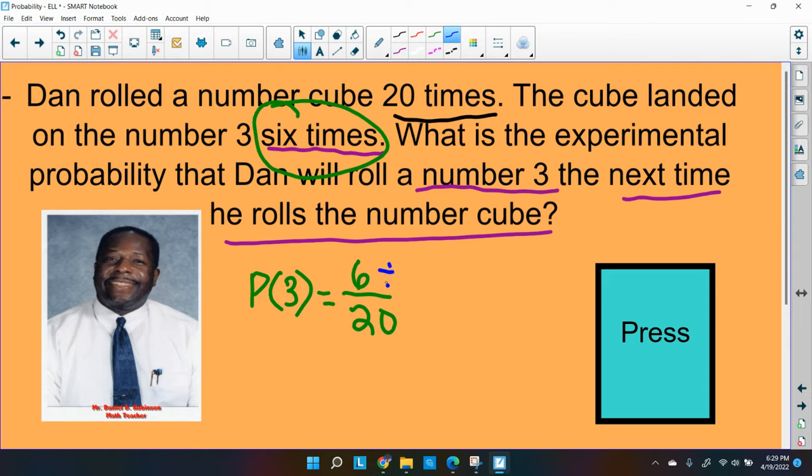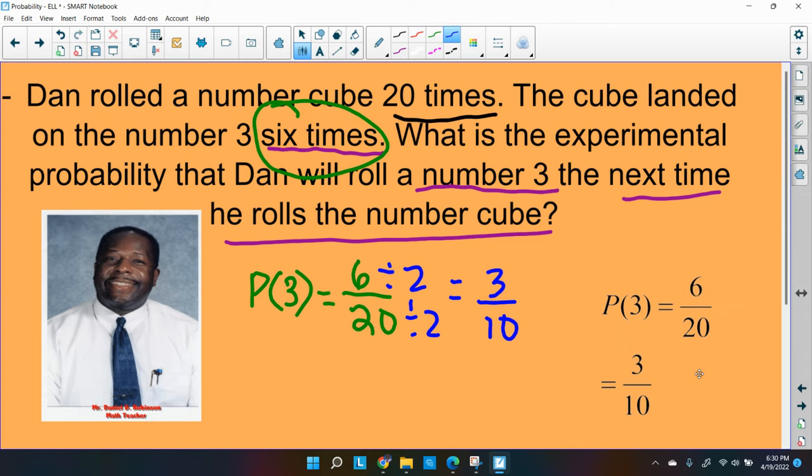So I can reduce that by dividing this by two. If I divide this by two, I'll get three out of 10. So the probability is three out of 10 chances of getting a 30%. You can also write that. So that's his experiment. And hopefully Dan will get a three next time.